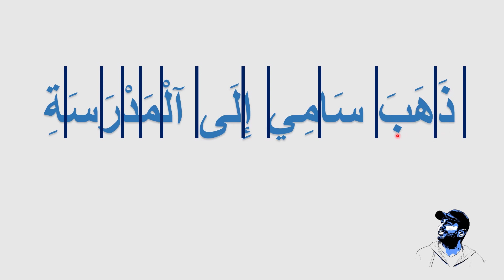So to summarize: "dhahaba" means went or go — since this is past tense. "Saami" is the name Sami. "Illa" means to. "Al-madrasati" means the school. In English: Sami went to the school. In Arabic we start with the verb — that's the standard verbal sentence. You can also say "Saami dhahaba illa al-madrasati", which is like the English word order, but the standard form starts with the verb: "dhahaba Saami illa...".